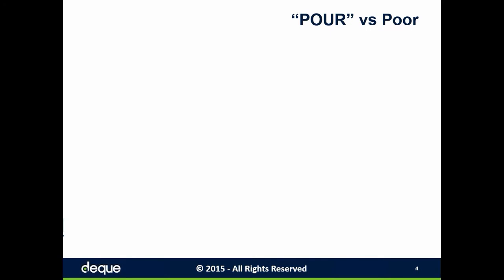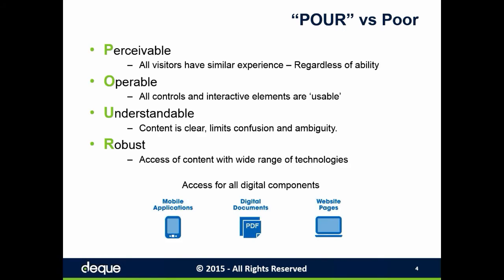I always instruct people to pour their heart — P-O-U-R — into their web creations and not design something that's poor. POUR is actually an acronym from the W3C, or World Wide Web Consortium's accessibility guidelines, broken into four sections. The first is Perceivable — web content needs to be made available to the senses: sight, hearing, and/or touch. A visually impaired user must be able to receive information via sound or touch, and a color-deficient user must be able to receive information without the use of color or color cues.